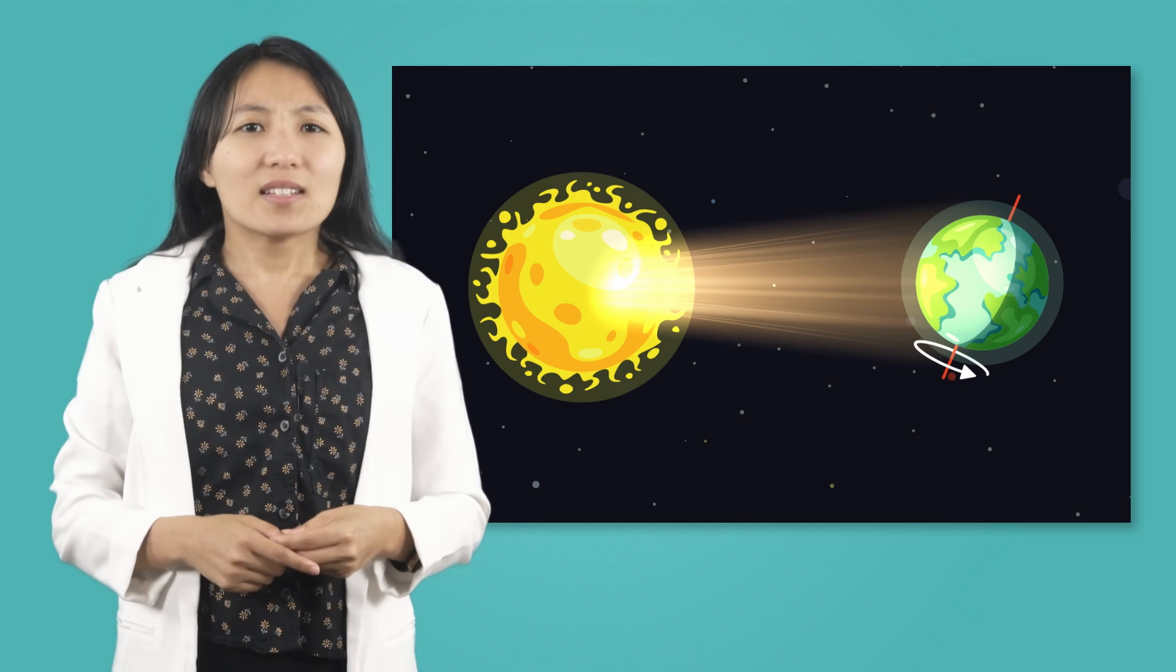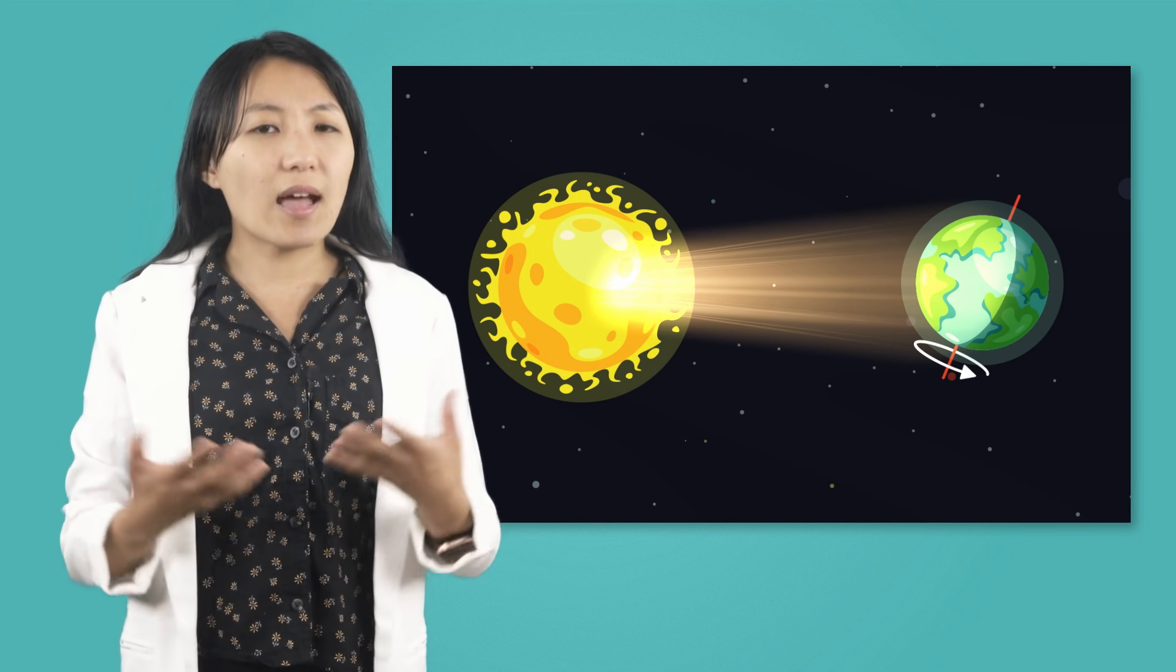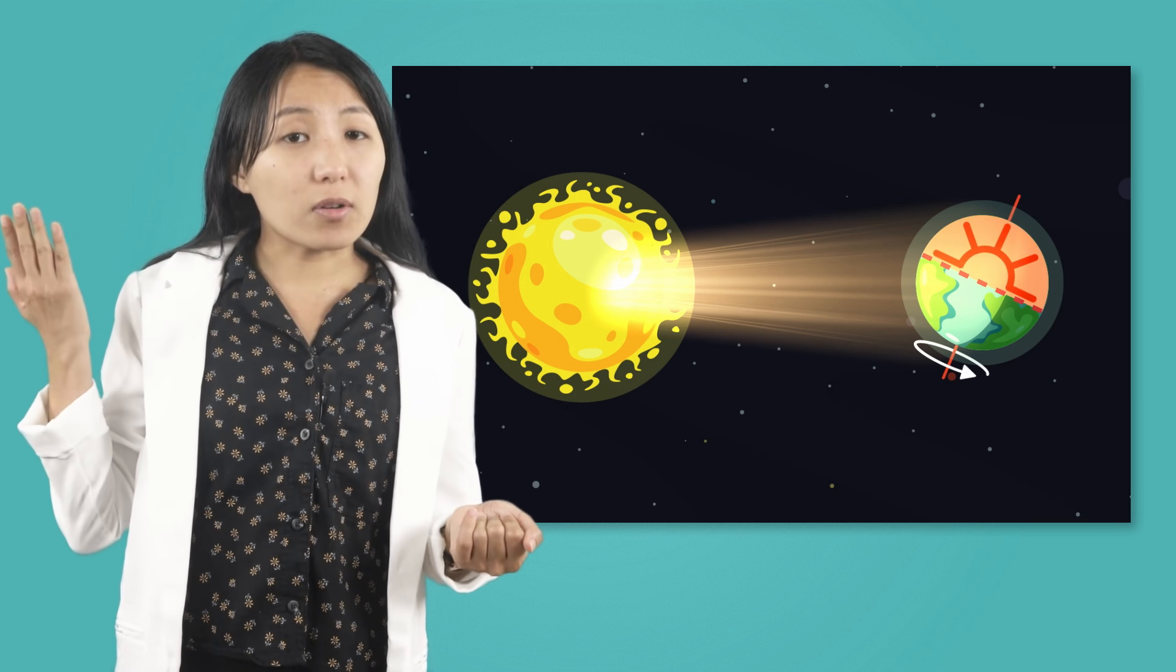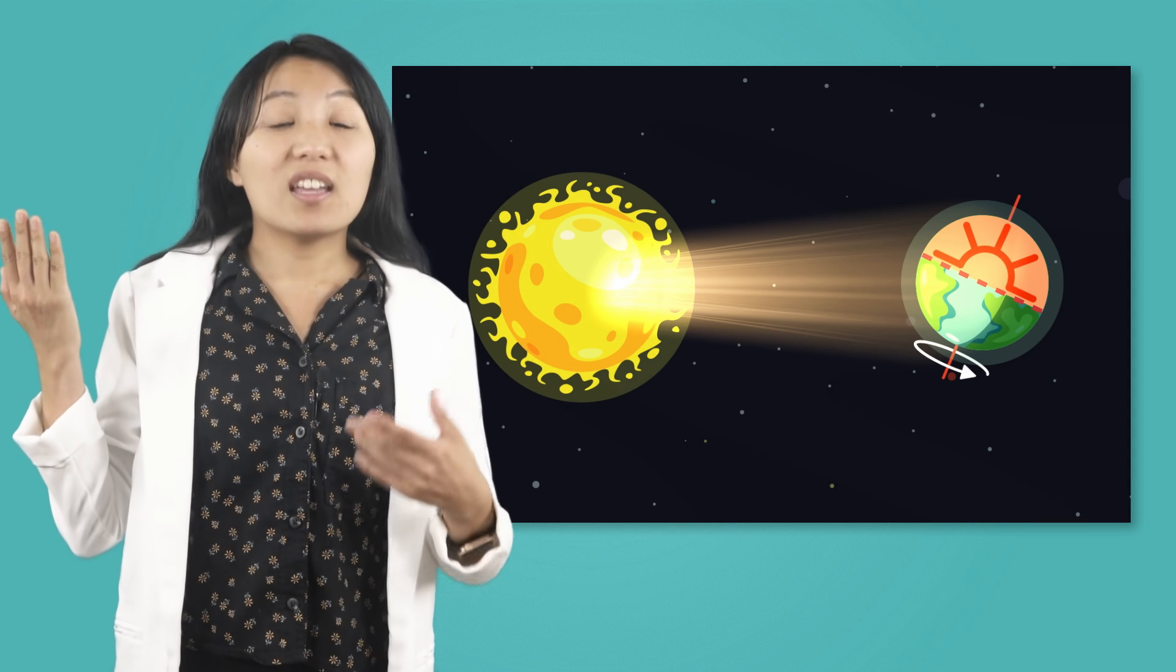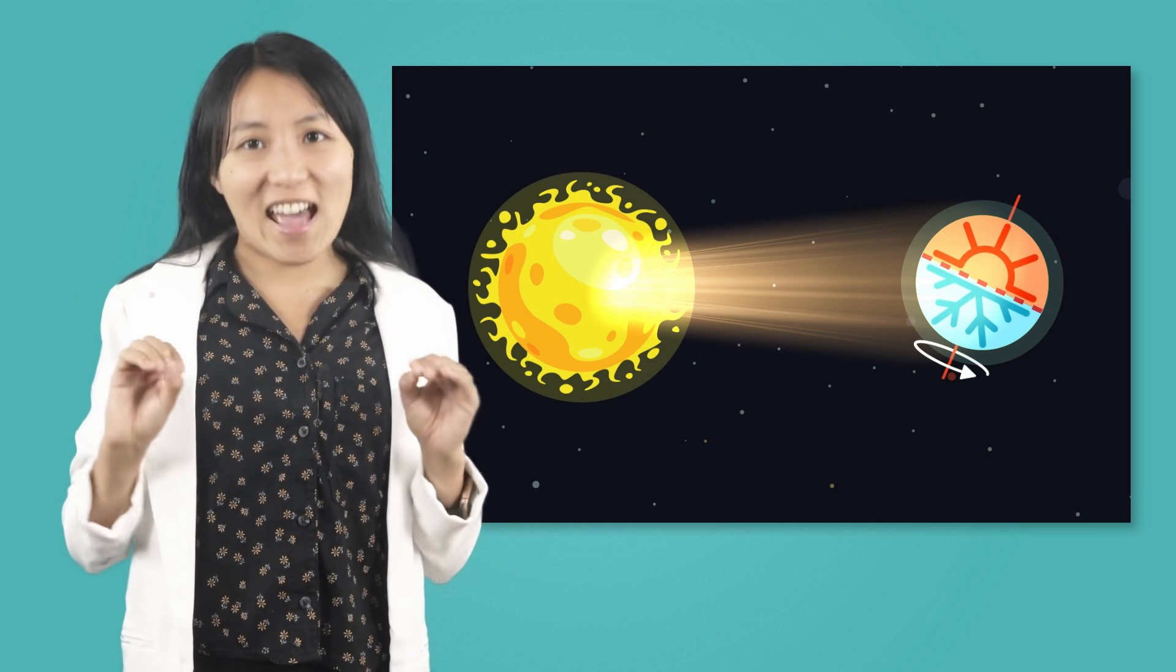Huh. That means that not everywhere on Earth experiences the seasons at the same time. So, when it is summer in the Northern Hemisphere, it is winter in the Southern Hemisphere. Fascinating!